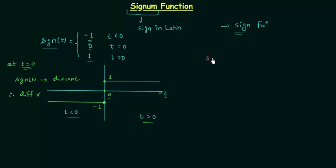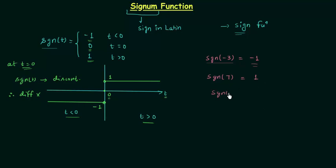In the first example, we have sgn(-3) and it is equal to minus 1, because signum function tells the sign of the number and the sign is negative. If we have sgn(7), then it is equal to 1. If we have sgn(0), it is equal to 0. There is one homework problem: find sgn(π − 3), and you need to tell me whether it is equal to minus 1, 0, or 1.